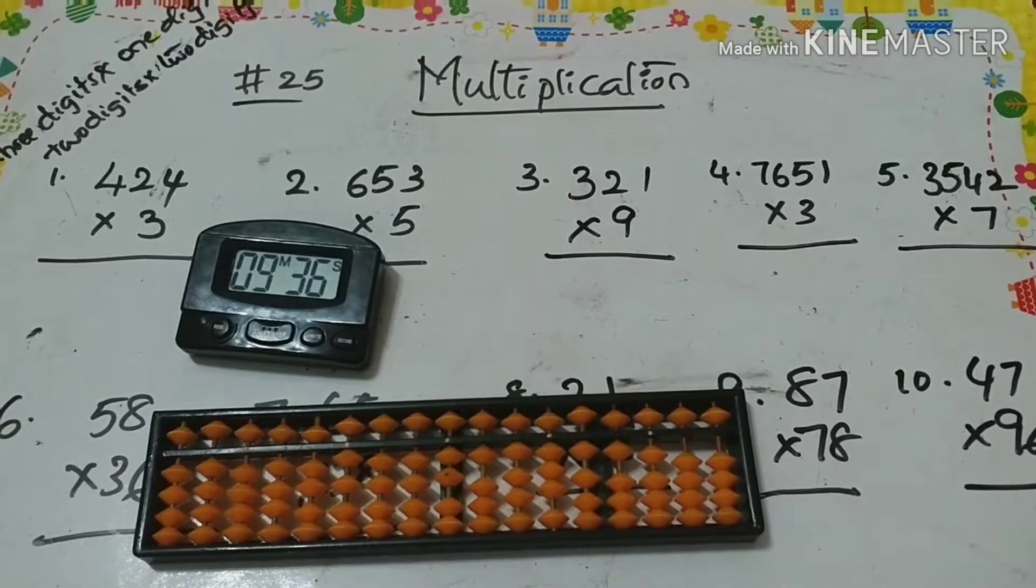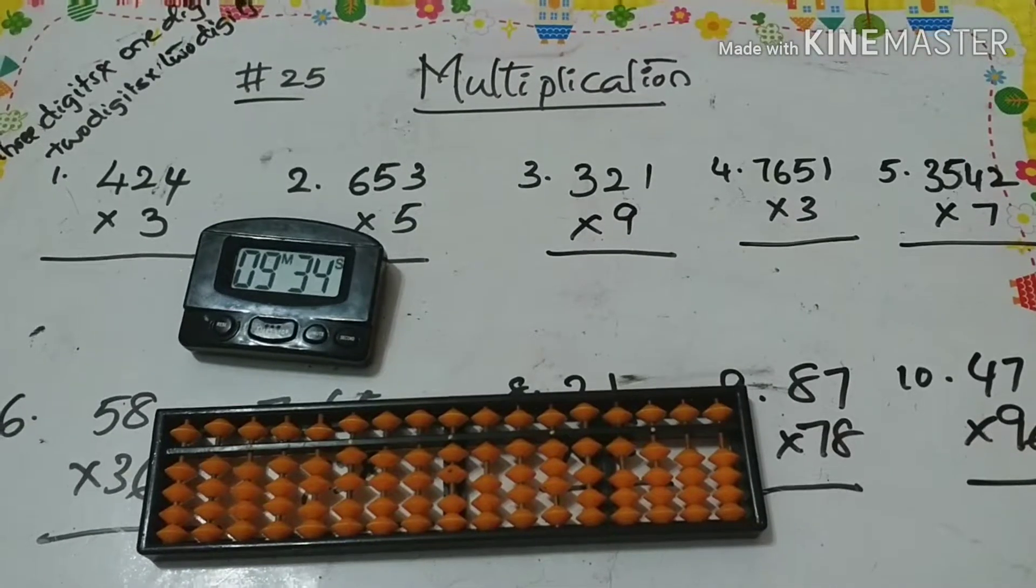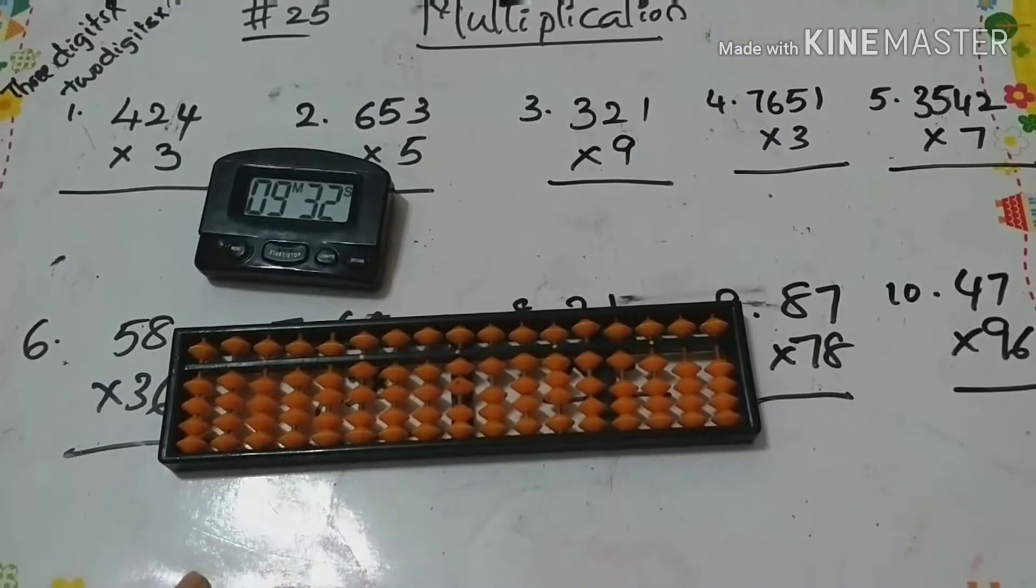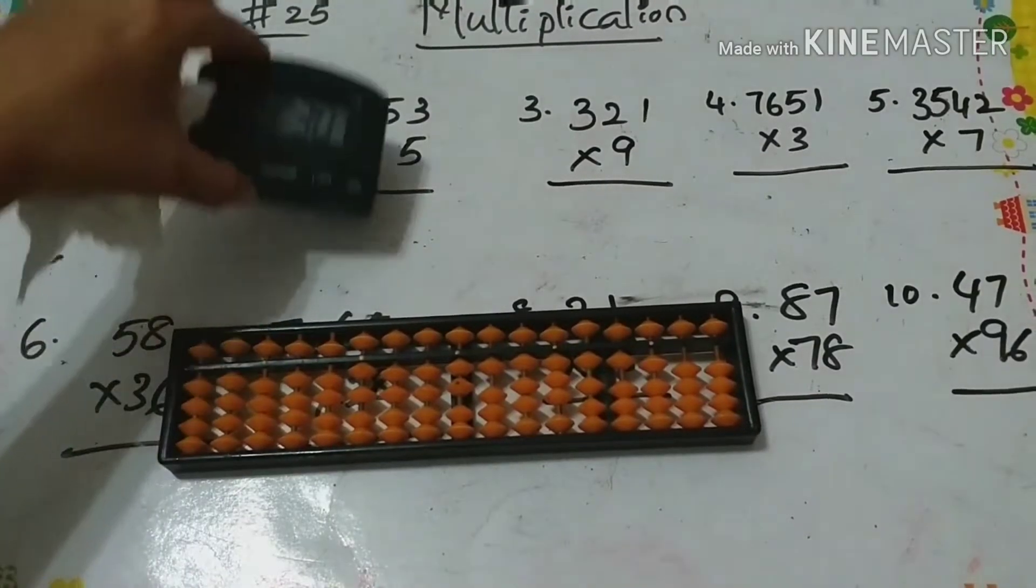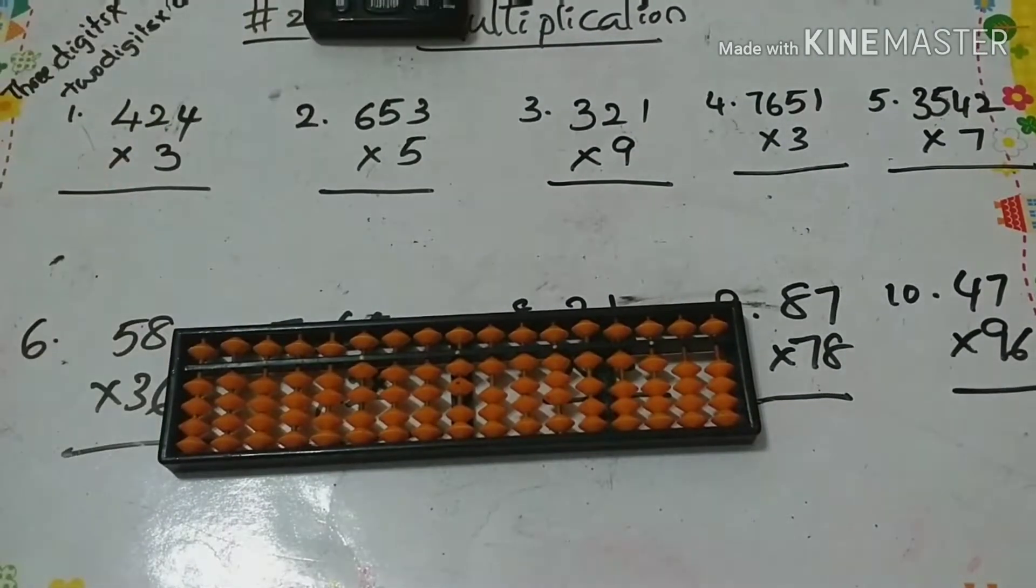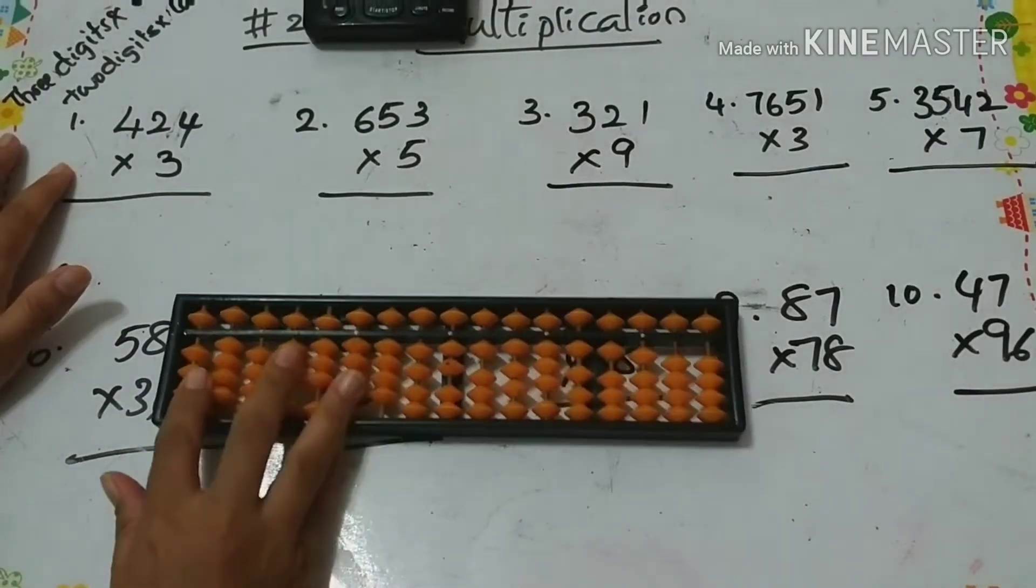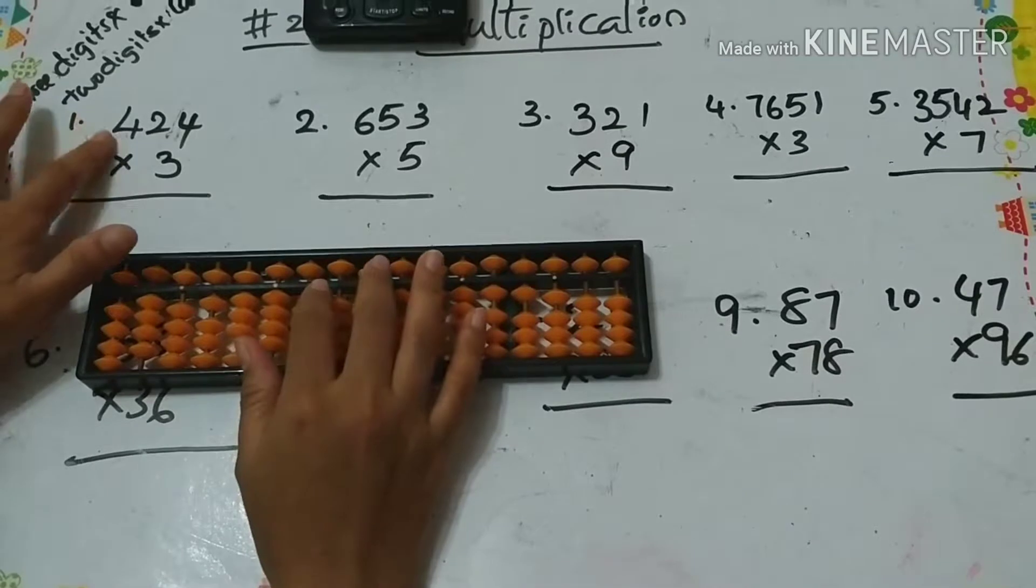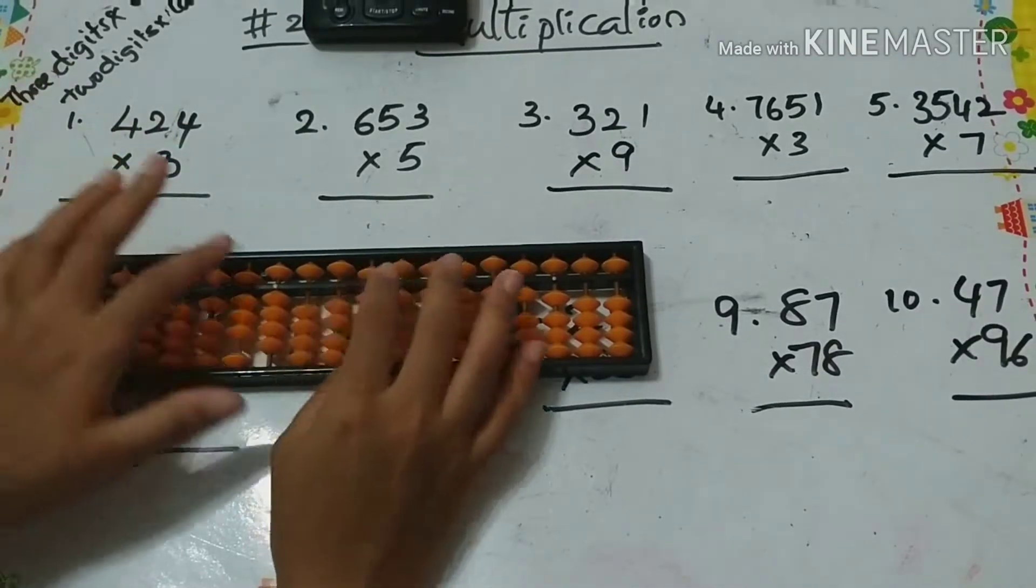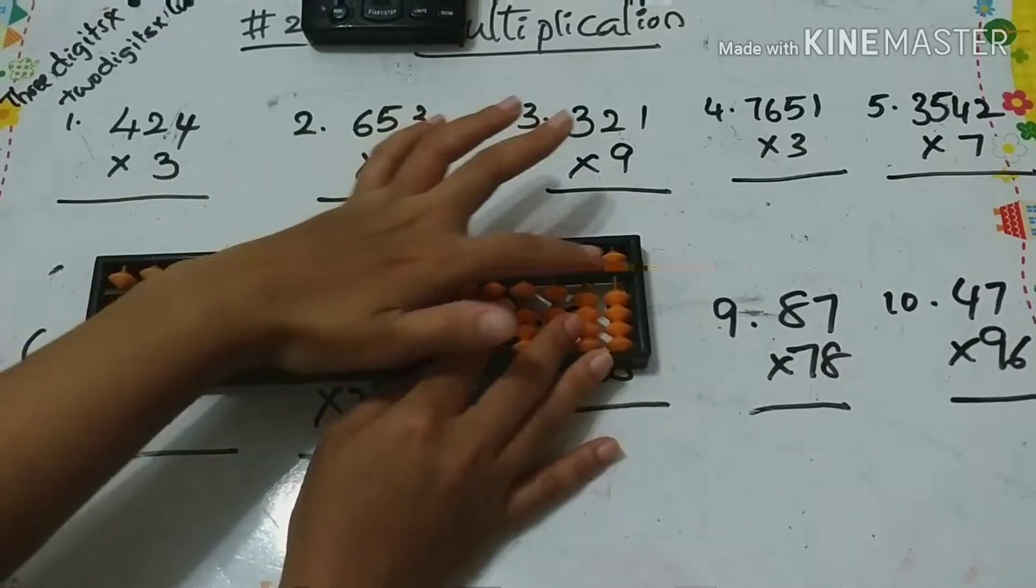So let's see an example. In three digit times one digit, we should use four columns on our abacus to represent our answer. 424 times 3 means three digits times one digit, so I'm using four columns on the abacus.